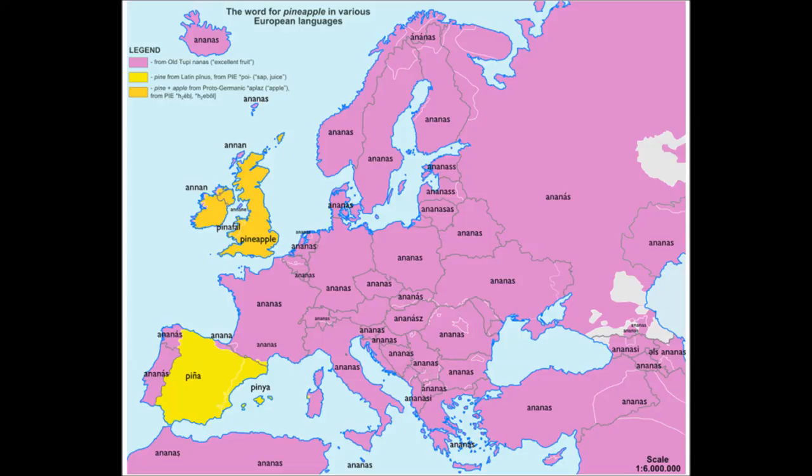In fact, take a look at this map. English, Welsh, and Spanish are the only languages in the whole of Europe to deviate from the 'ananas' standard. Now, it's not surprising that there is this widespread agreement on the term, because pineapple is a fruit native to the Americas, and so would have been introduced to Europe as a whole at the same time. But how did it get its names?